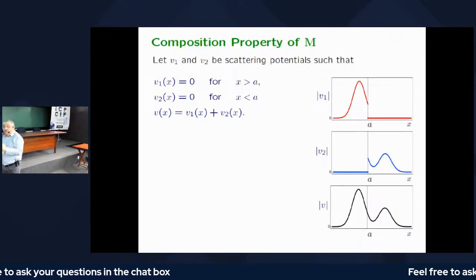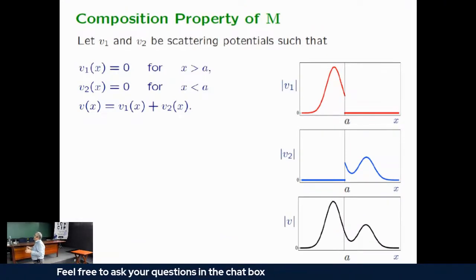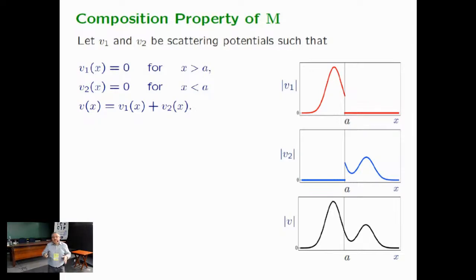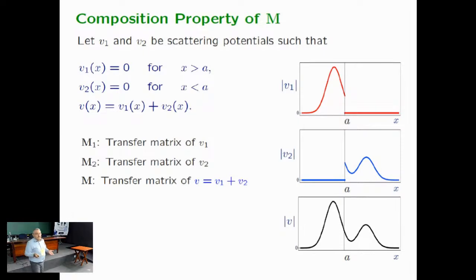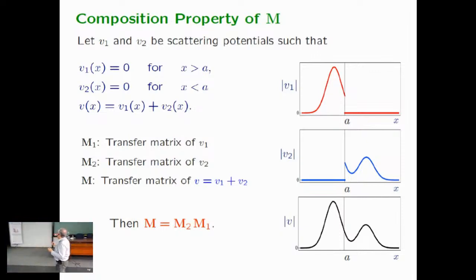The most important property of the transfer matrix is its composition property. If a potential V is split into two pieces V₁ and V₂ with supports to the left and right of some point A, then the transfer matrix M of V equals M₂ times M₁ — the product of the transfer matrices of the pieces, in an order determined by the positions of their supports. Exactly ten years ago, I noticed that this composition property is almost identical to how we compose evolution operators in quantum mechanics: evolving from T₀ to T₂ via an intermediate time gives the product U₂·U₁ in the same order.